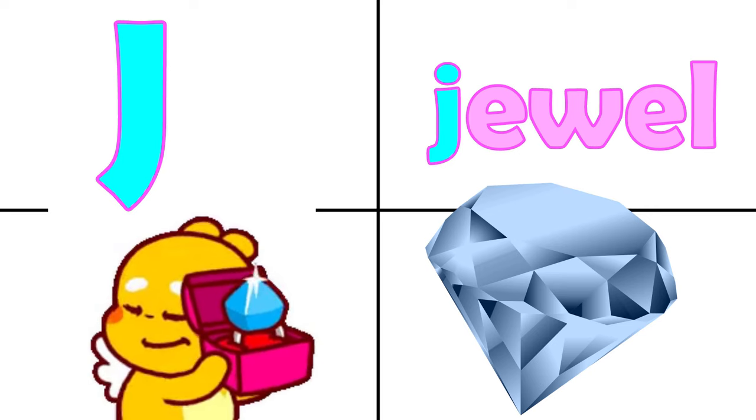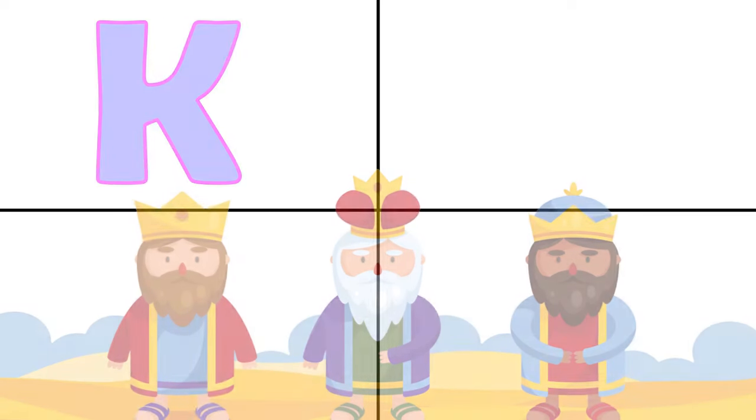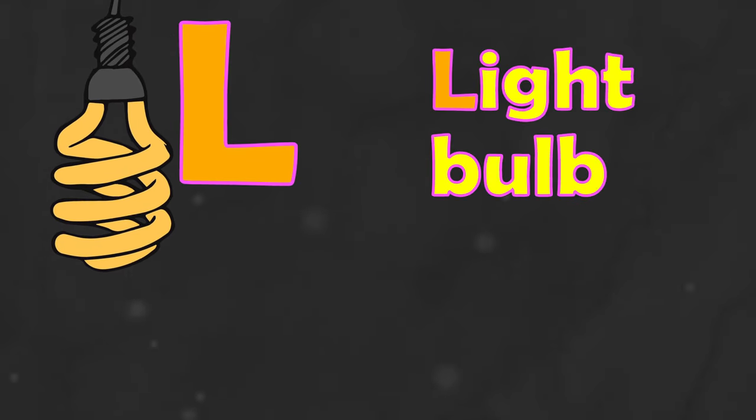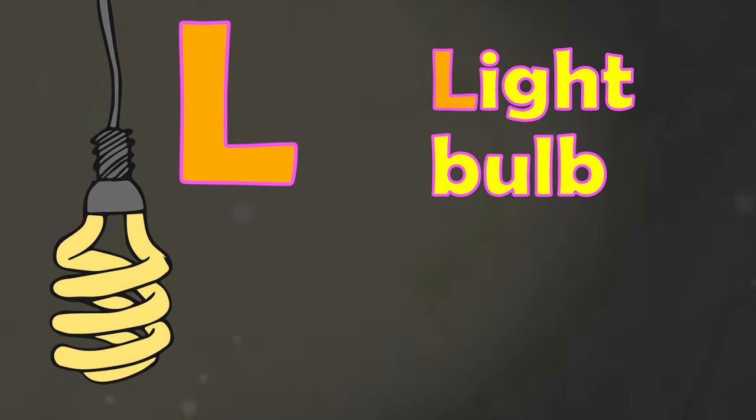J is for jewel, j. K is for king, k. L is for light bulb, l.